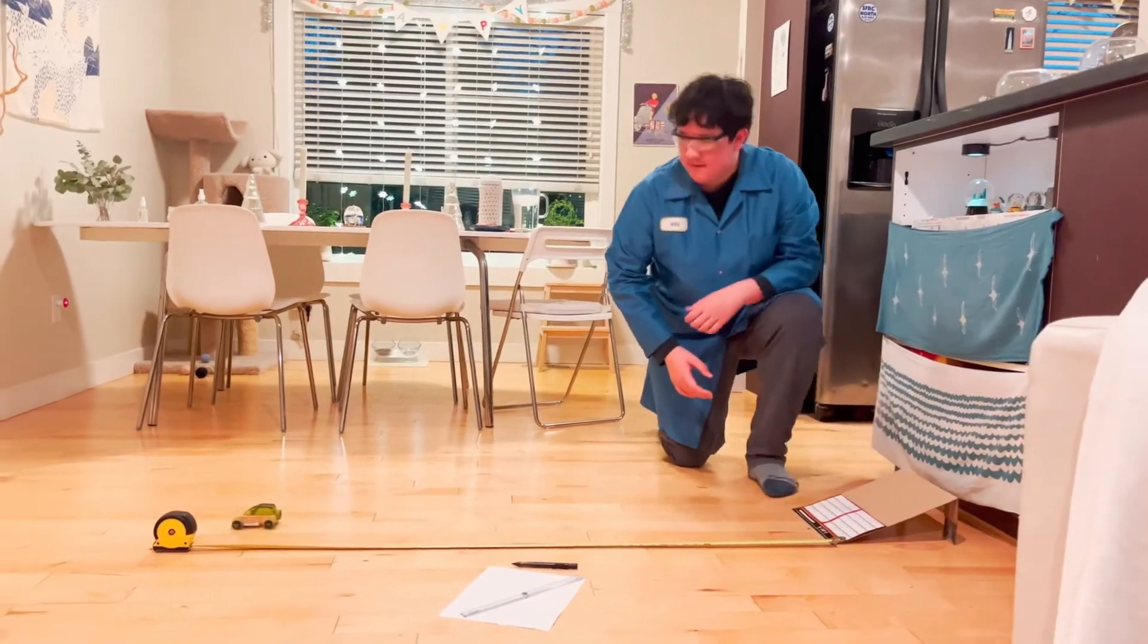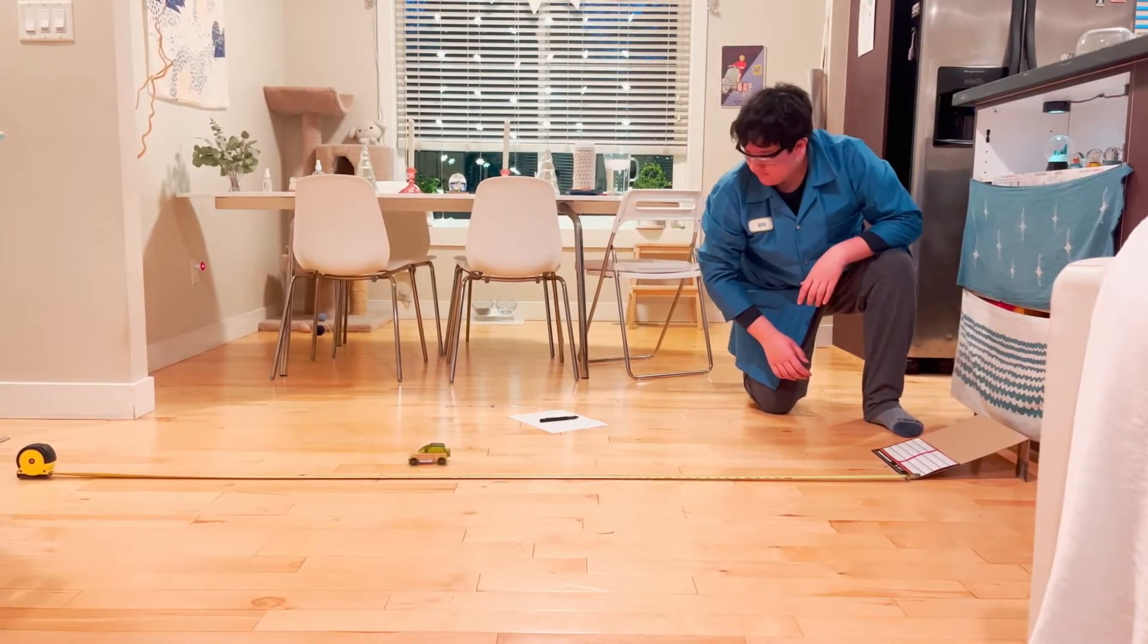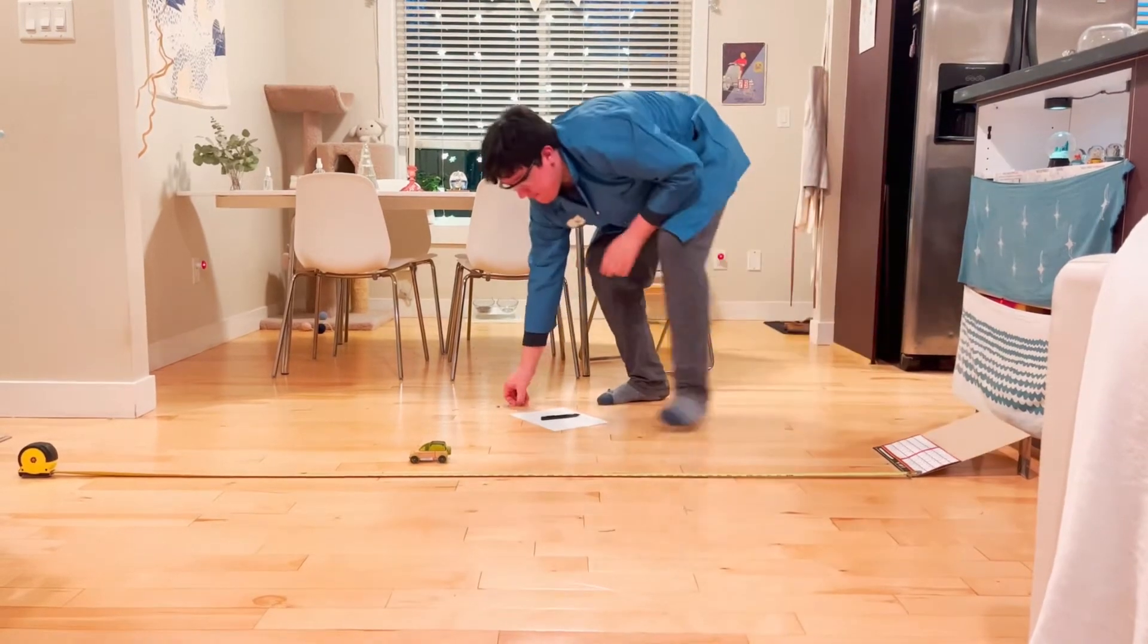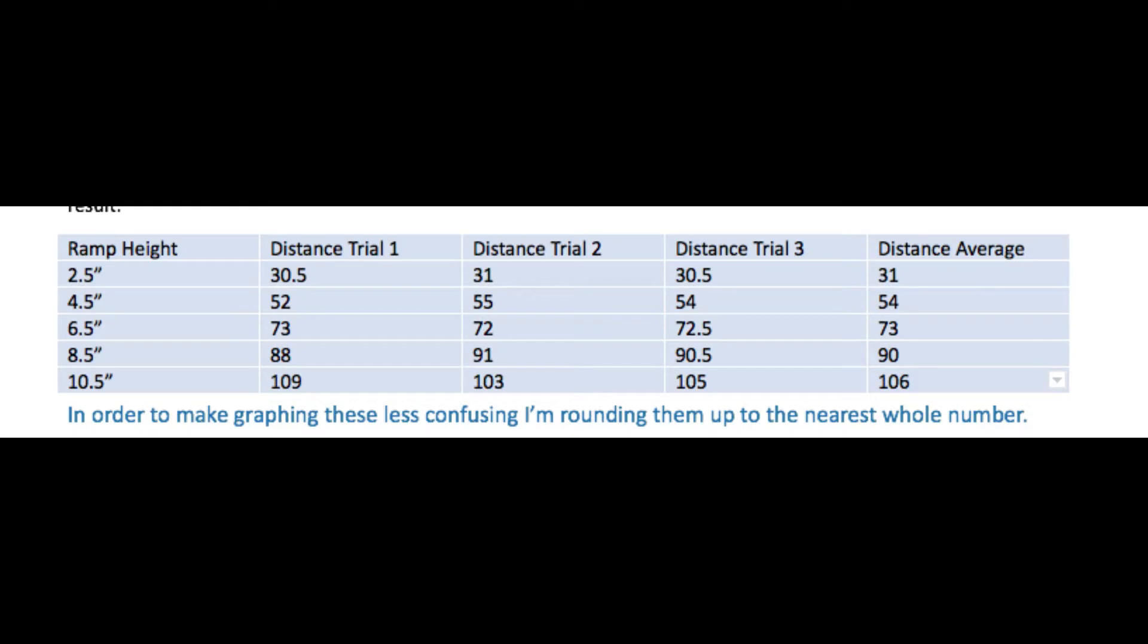Step one is to make the ramp and choose my car. After I chose my car and built my ramp, I had to come up with five different heights for the ramp, which you can see here. After I chose them, I ran the car down three times per height so I could get an average distance. Now it's time for step two: graphing time.